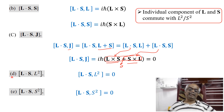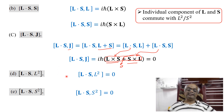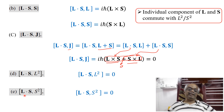The next relation is [L·S, L²]. We know that each individual component of L and S commutes with L² or S². So naturally [L·S, L²] = 0. In a similar way, [L·S, S²] = 0.